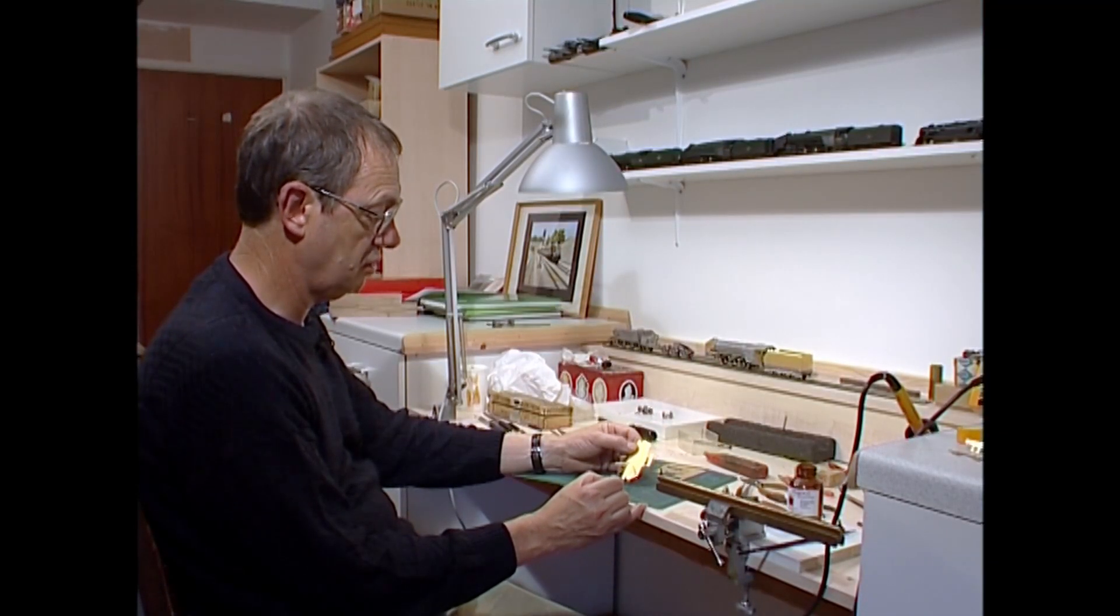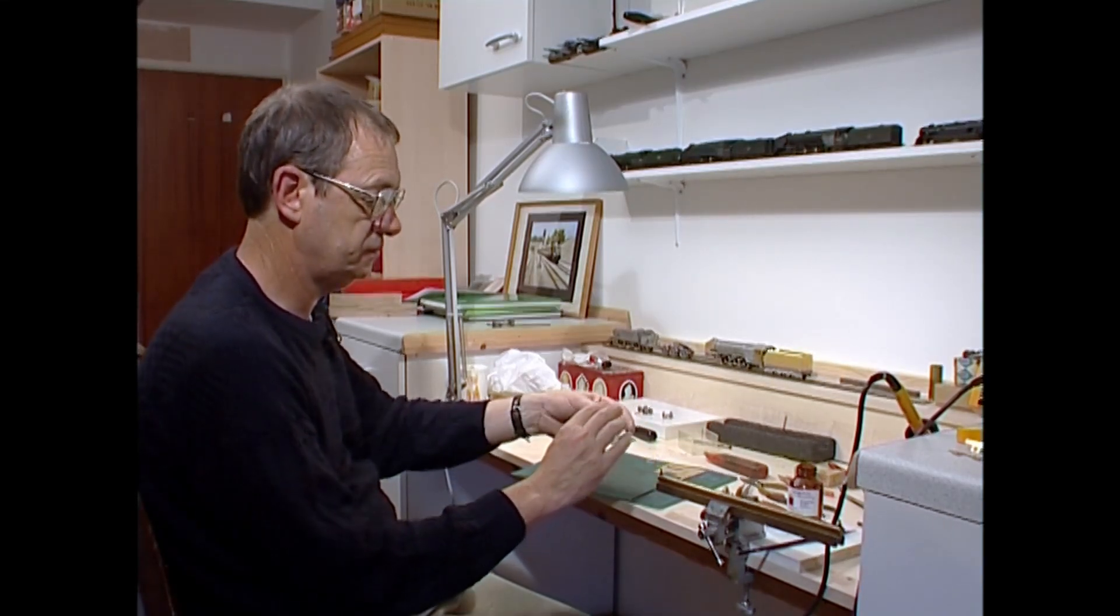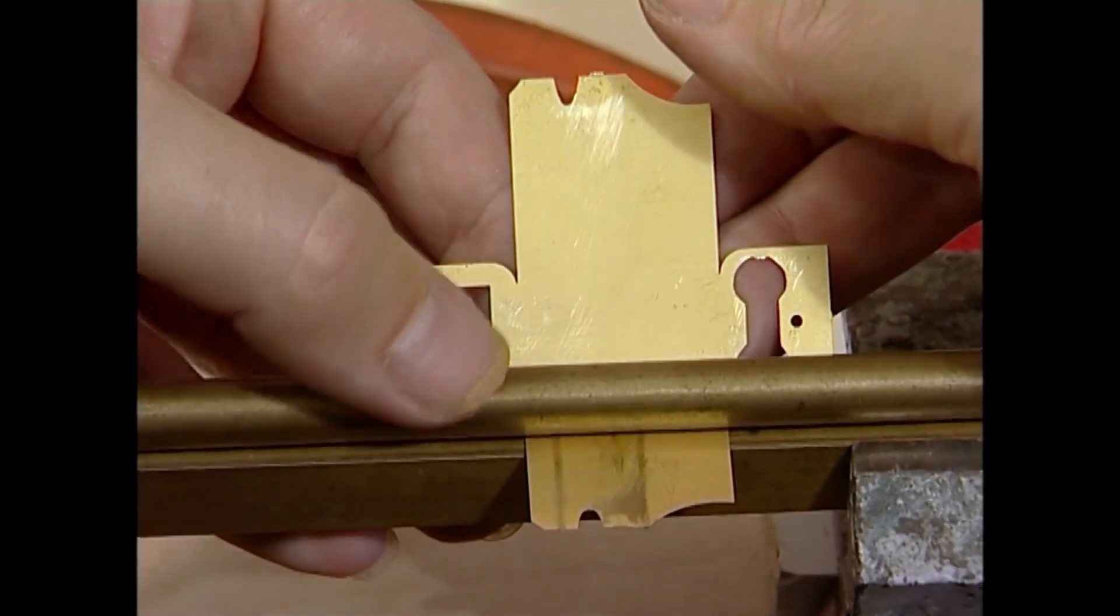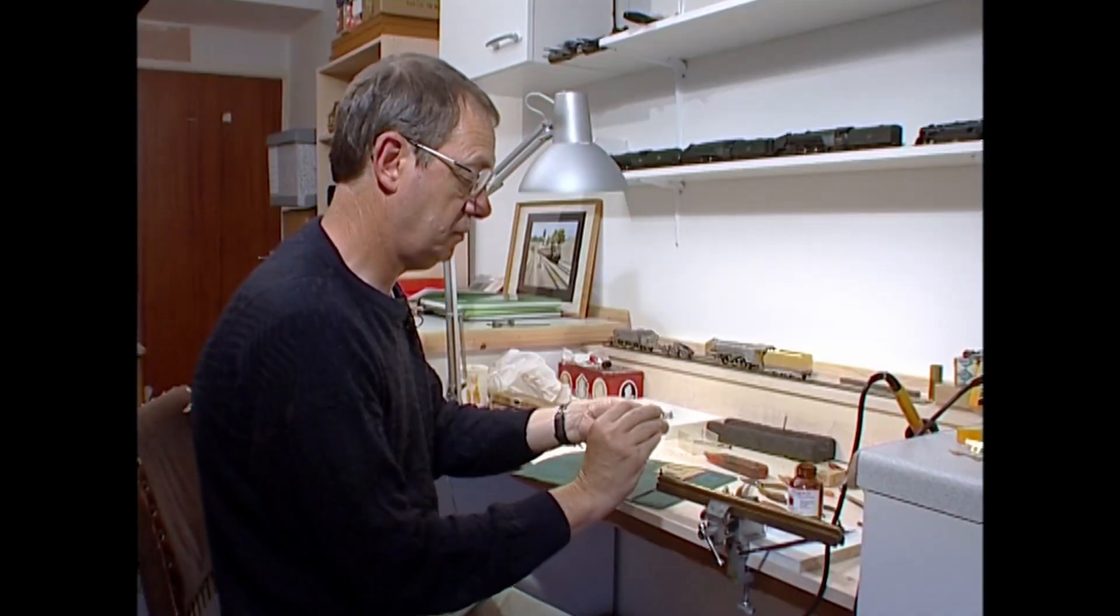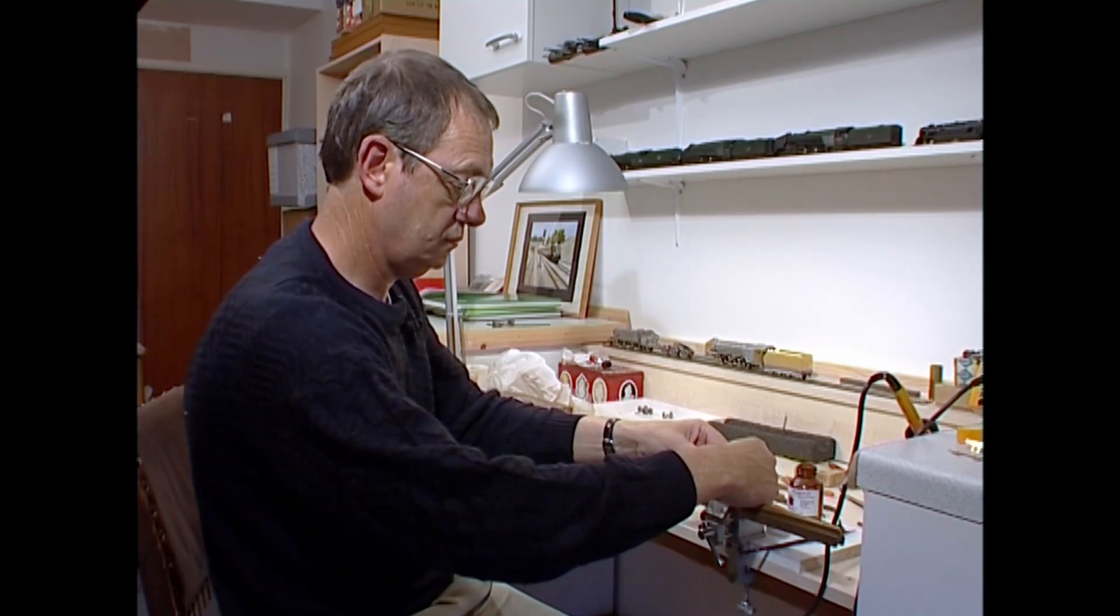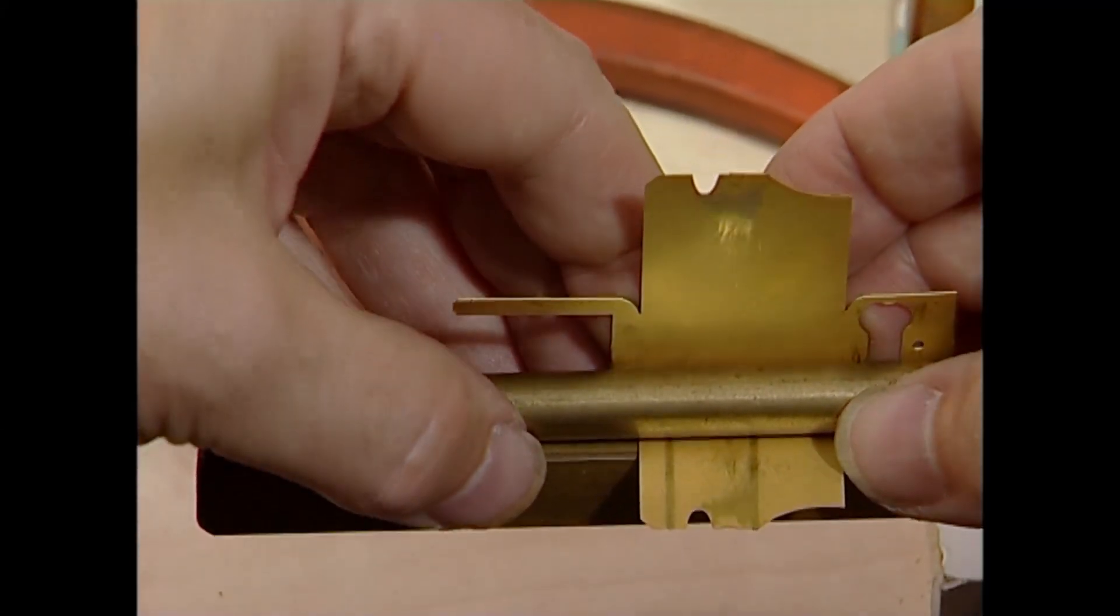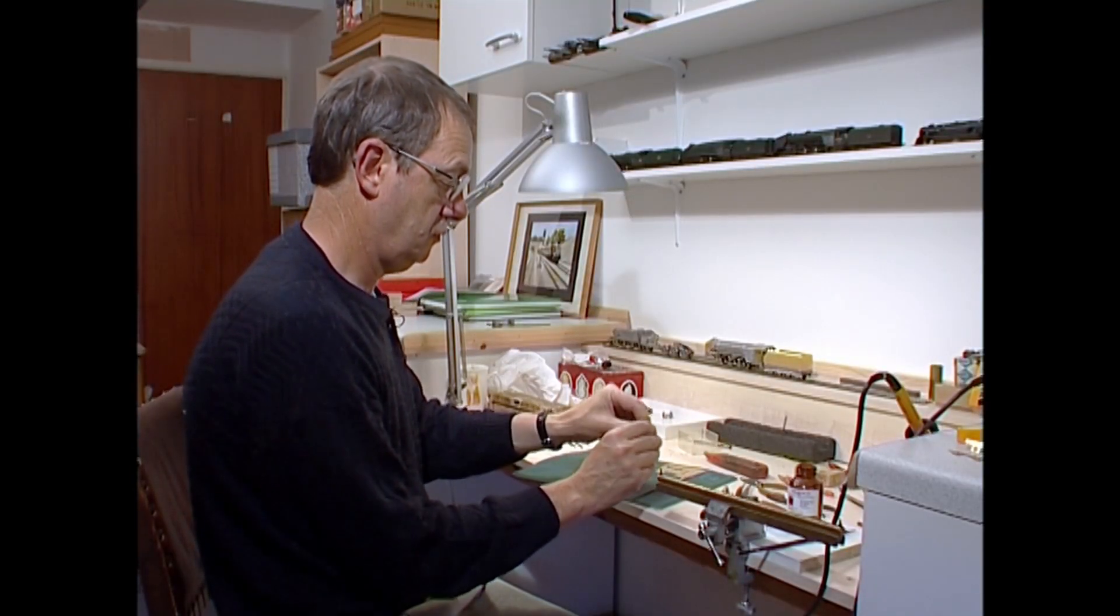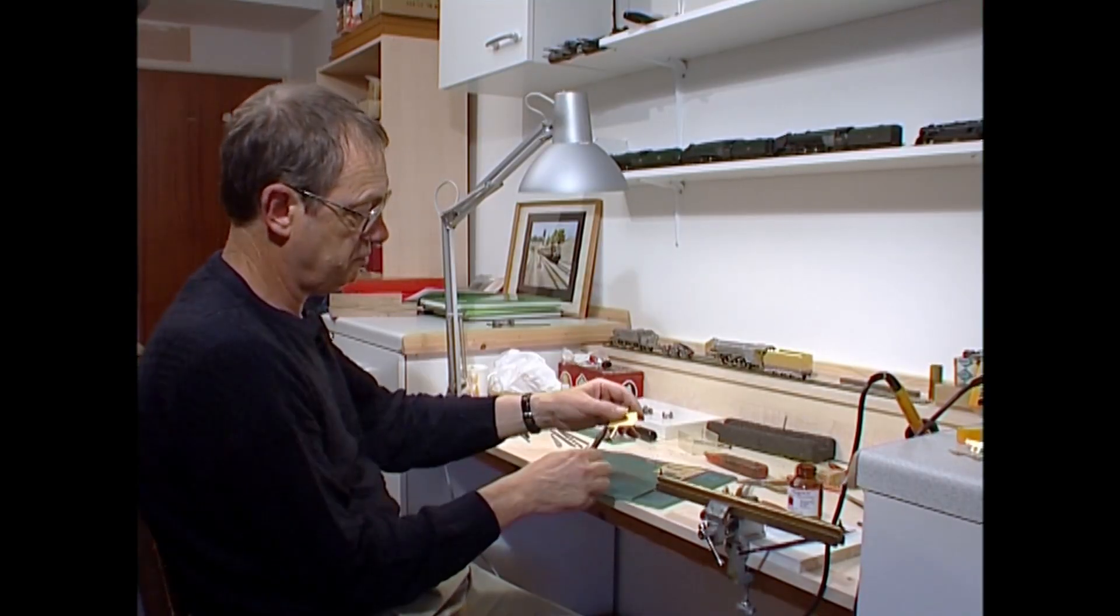And I'm going back to use the device I started forming the A2 smoke deflectors with. Again, feeding this through. So if you note here, that's the shape it should be. So you do have guidance. Whatever you do, don't bend these down at this stage. Otherwise you won't be able to get the things in.